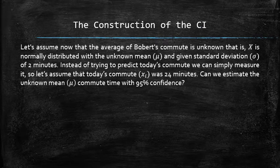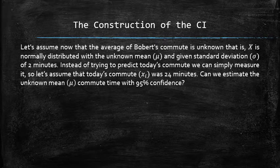Let's assume now that the average of Bob's commute is unknown, that is X is normally distributed with the unknown mean μ and given standard deviation σ of 2 minutes. Instead of trying to predict today's commute, we can simply measure it. So let's assume that today's commute was 24 minutes. Can we estimate the unknown mean μ commute time with 95% confidence?